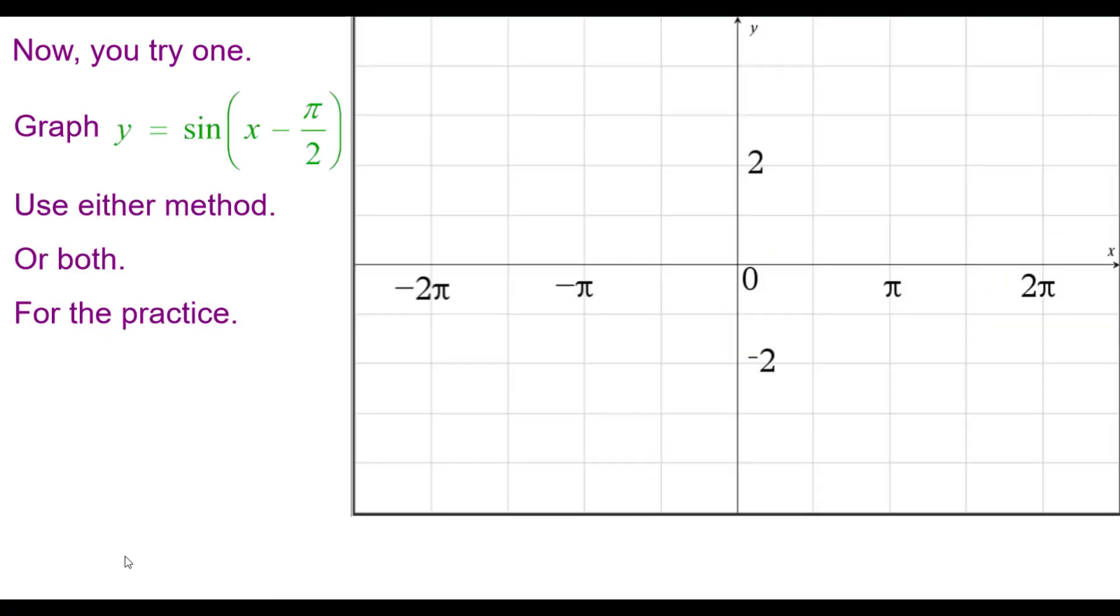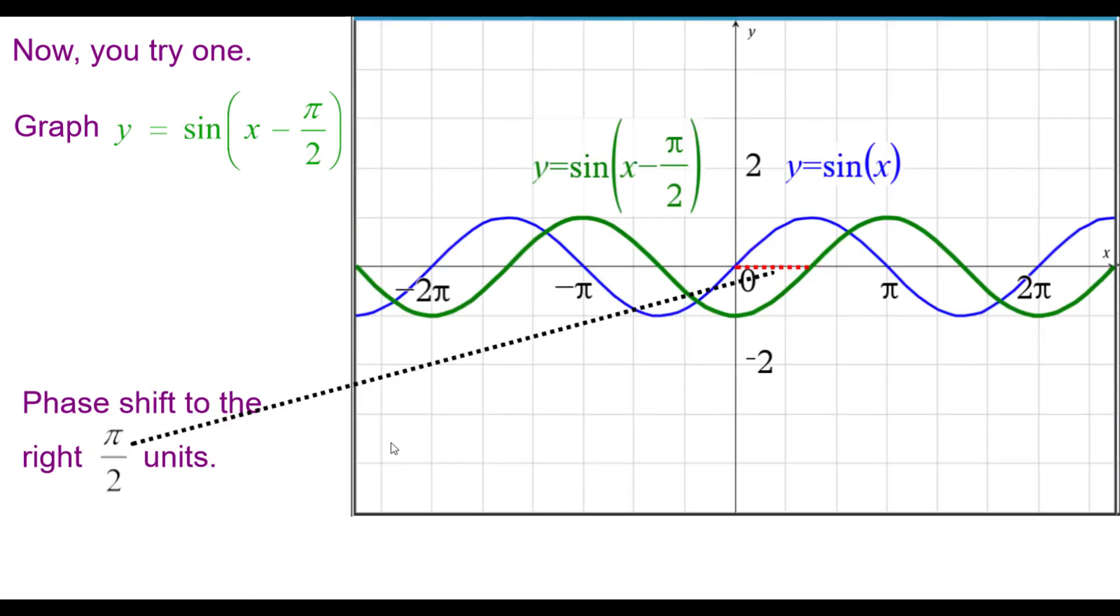Now you try one. Graph y equals sine of the quantity x minus pi over 2. Use either method or both for the practice. Pause as needed. Resume when you're finished. And here's our answer in green. And you'll notice from blue to green it's shifted pi over 2 units to the right.